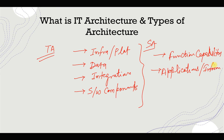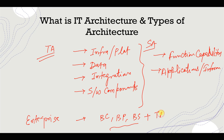Enterprise architecture is a blueprint of your company which talks about everything — technologies, solutions, business strategies, business capabilities, and business processes. It talks about business capabilities, business processes, and business strategies, plus the technologies. So we need to consider technical architecture in this one, along with functionalities as well.